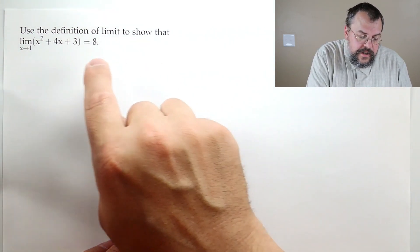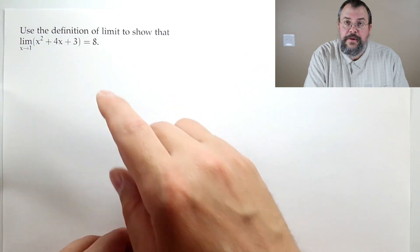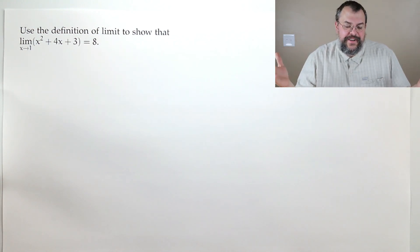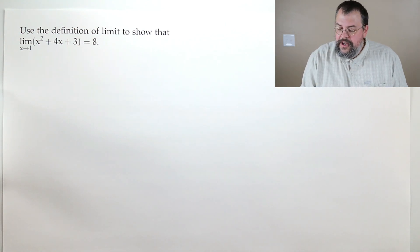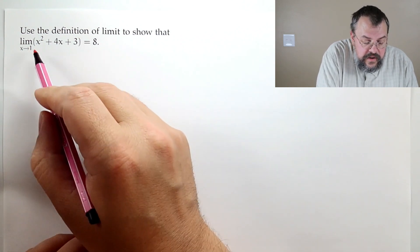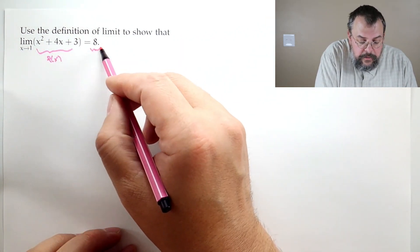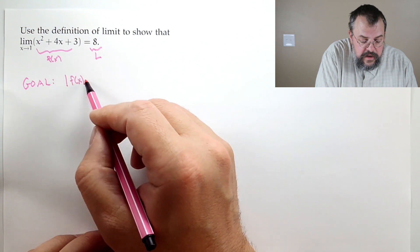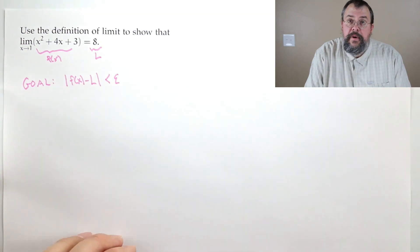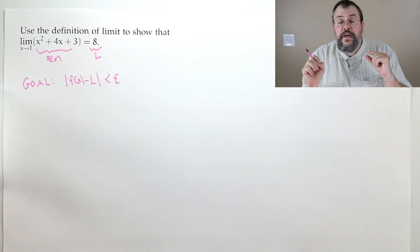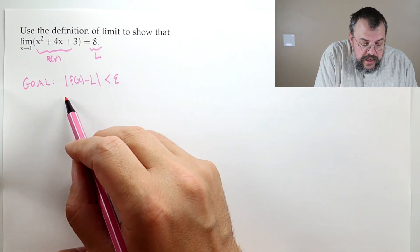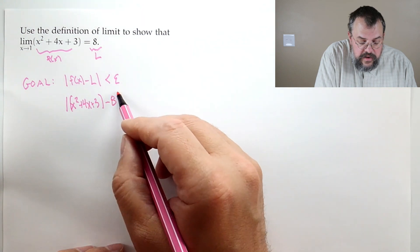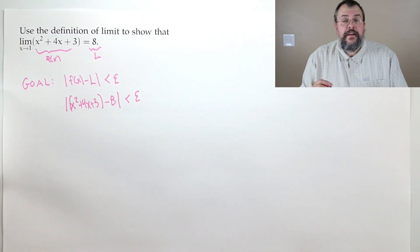Use the definition of limit to show that the limit as x goes to 1 of x²+4x+3 equals 8. We're using the definition of limit. Polynomials are really nice, so we kind of expect this is the right answer, but we want to be really careful. Our goal is to show that the absolute value of f(x) minus L is less than epsilon, where epsilon is some arbitrary, usually small, number.